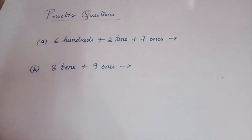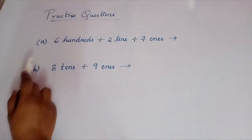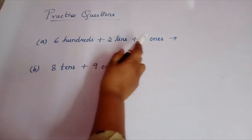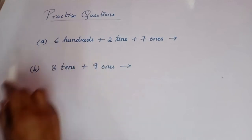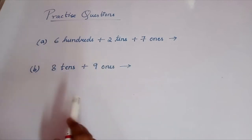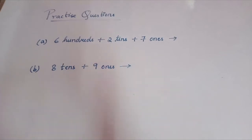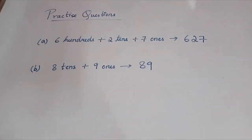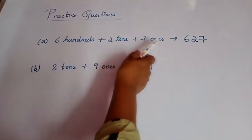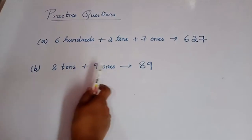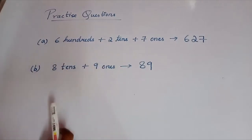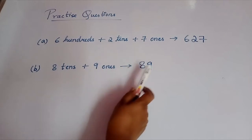These are your practice questions. First: 600 plus 2 tens plus 7 ones. Second: 8 tens plus 9 ones. Solve them yourself and then check the answers. Now let's check: The first one, 6 hundreds plus 2 tens plus 7 ones — written in short form is 627. The second one, 8 tens plus 9 ones — that is a 2-digit number, written as 89.